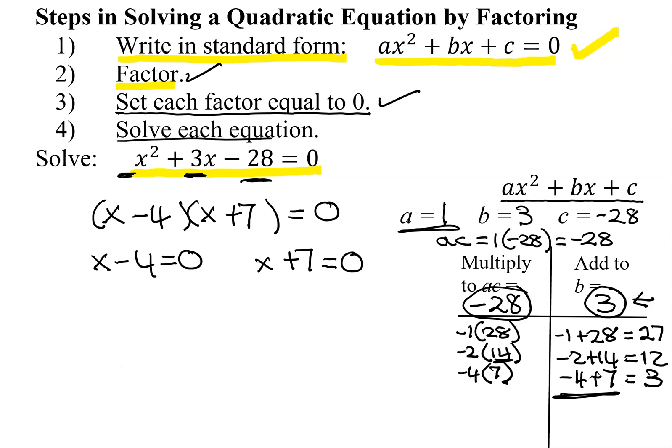And then we solve each resulting equation. So the first one, add 4 to both sides. The second one, subtract 7 from both sides. So there are my two solutions to this quadratic equation.